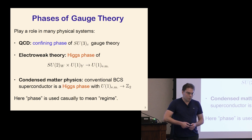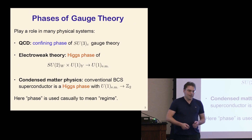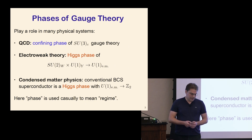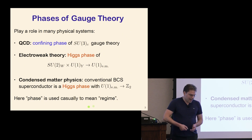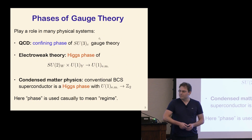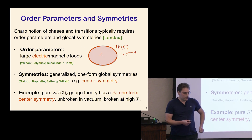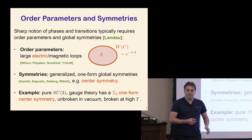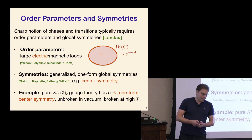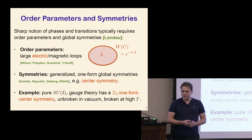The Higgs mechanism famously plays an important role in the theory of superconductivity as well, where in the simplest setup, electromagnetism is broken to some Z₂ discrete gauge group. On this slide, the word 'phase' was used casually — it should really be in quotes. It's not precisely defined; I just meant it as a substitute for 'regime'.